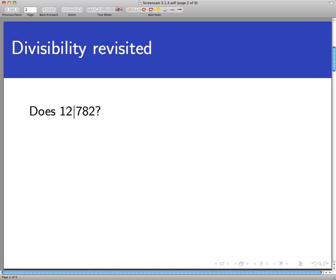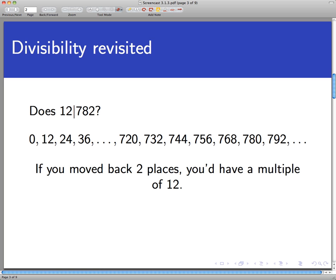We were asking in a concept check earlier whether 12 divides 782, and the way we answered that seemed kind of inefficient at the time, but here it's going to pay off for us. How do I know if 12 divides 782? Well, turn that around and ask, is 782 a multiple of 12? And the way we thought about this was just listing out the multiples of 12, starting with 0, then 12, then 24, and so forth, and just seeing if 782 is in the list, and it isn't.